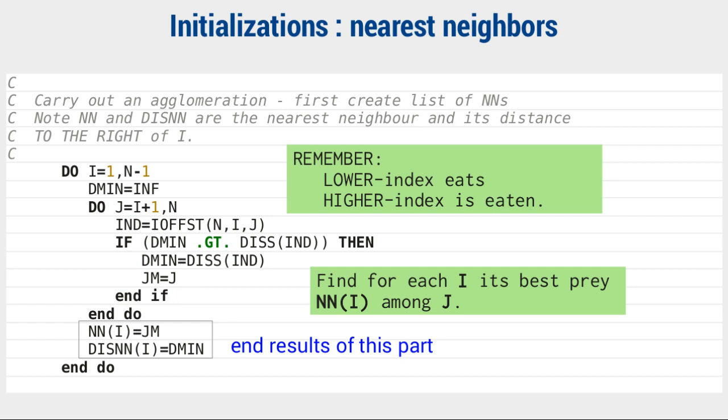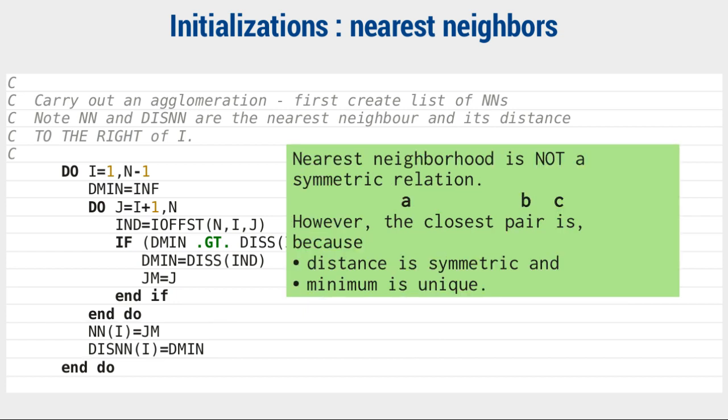In this process, because we have defined that only lower index item eats higher index item, for each i, we only have to find the closest item j among the later items because only they are the potential preys. Wait a minute. Will it work? Because B being closest to A does not mean A being closest to B.